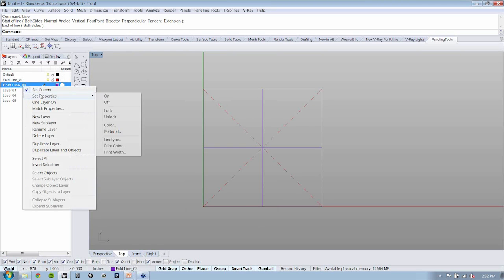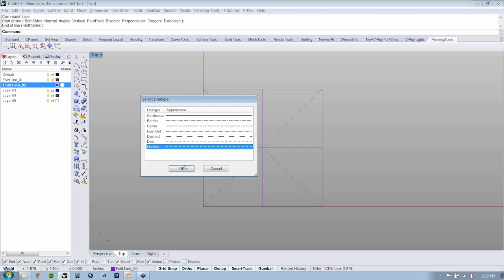We can set the properties and change the line type. We'll see here that we now have a series of fold lines indicating the various axes where the folding may occur.